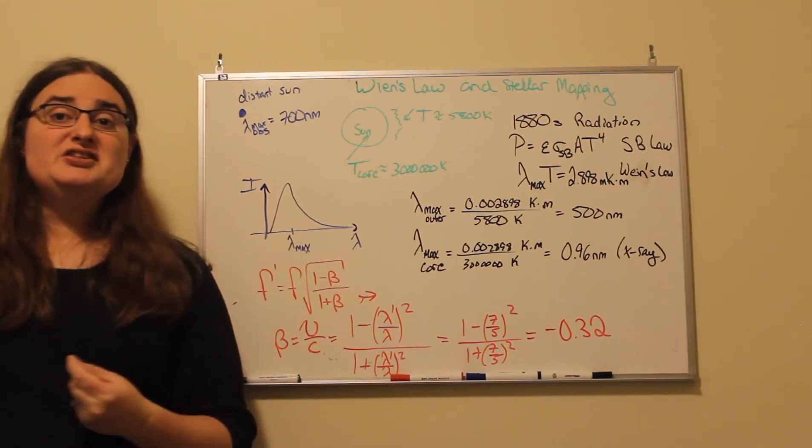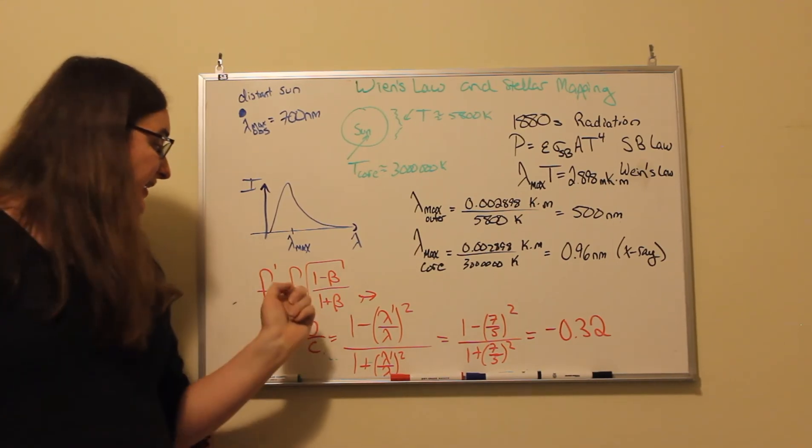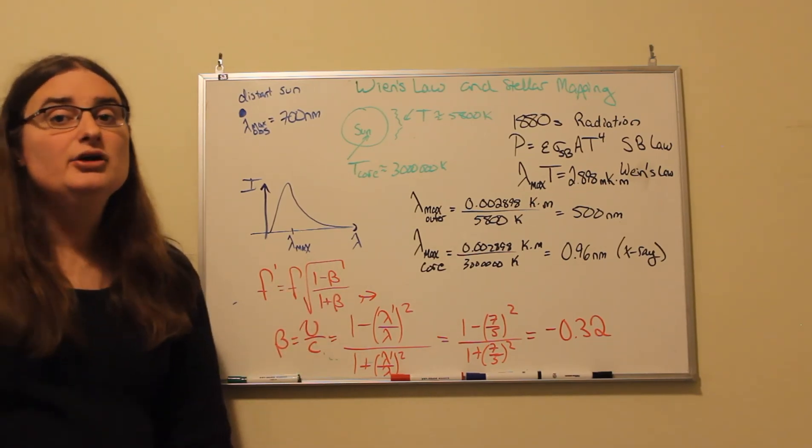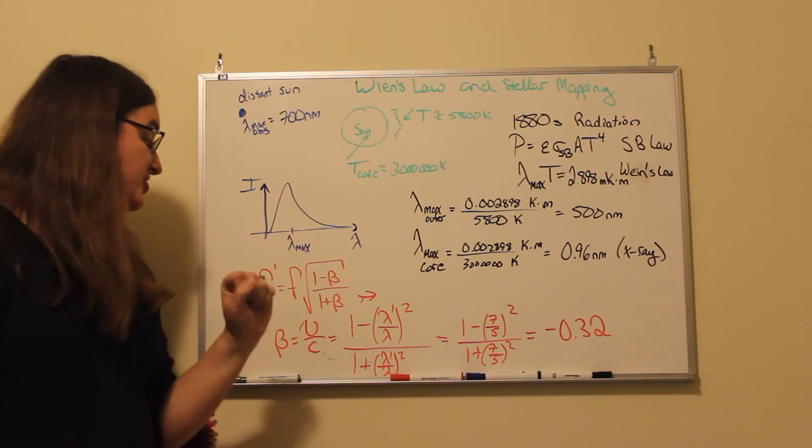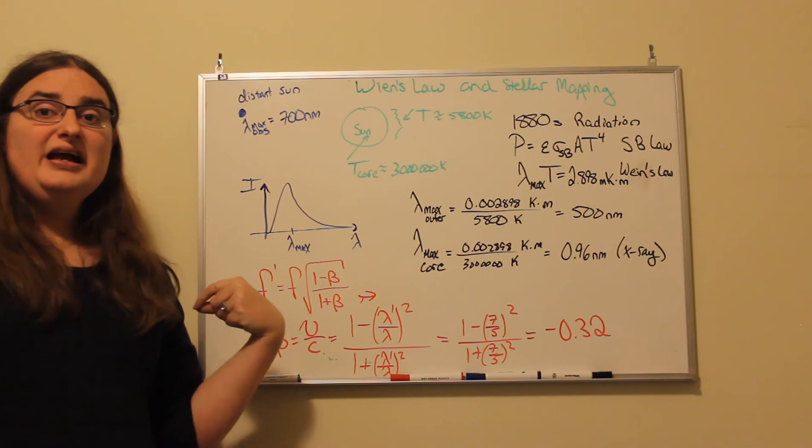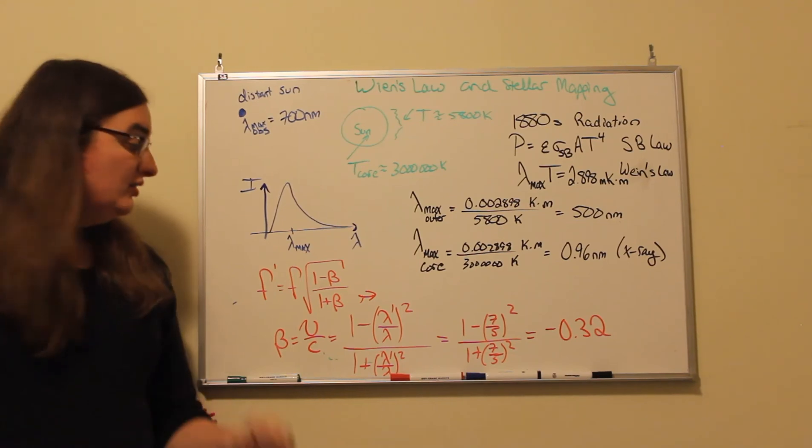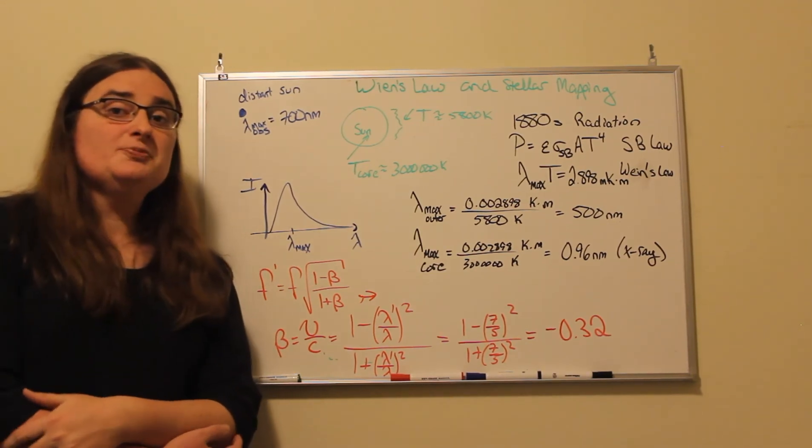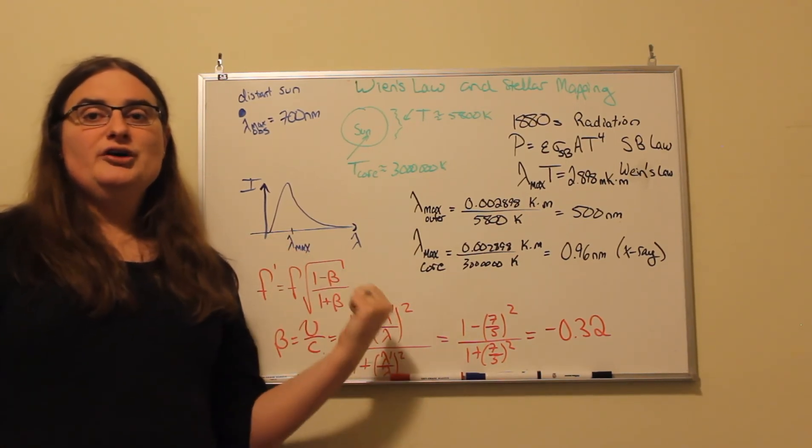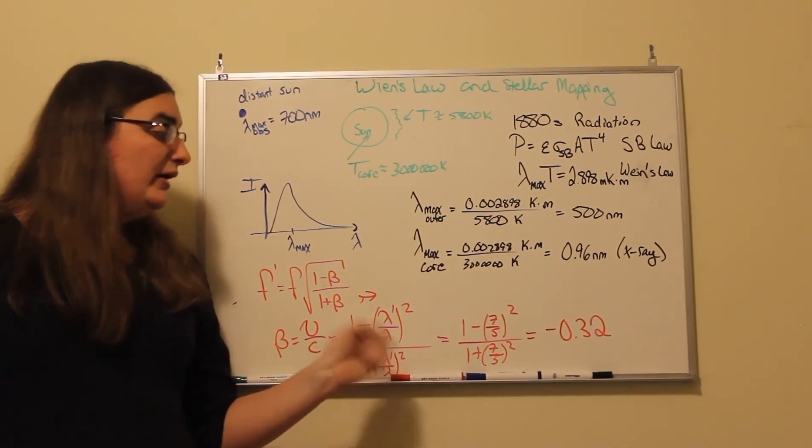So from the relativistic Doppler equation, a shifted frequency would be the true frequency of that light times the square root of 1 minus the relative velocity over 1 plus the relative velocity. So if we're to do a little bit of algebra, switch things around into wavelengths instead of frequencies, and then solve for our relative speed given the wavelengths, then what we would see would be a relative speed that would be equal to 1 minus the shifted wavelength over the true wavelength squared divided by 1 plus the shifted wavelength over the true wavelength squared.